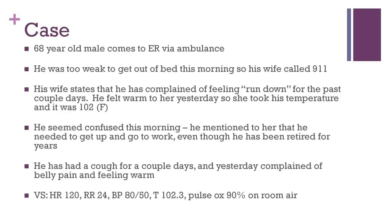His vital signs on arrival to the ER include a heart rate of 120, respiratory rate of 24, blood pressure of 80 over 50, temperature of 102.3, and a pulse ox of 90% on room air. Even with that information alone, you can see there would be concern for sepsis. The patient meets criteria for SIRS because he has tachycardia, tachypnea, and an elevated temperature. You suspect infection because he has had a cough and has been feeling run down and subjectively febrile.